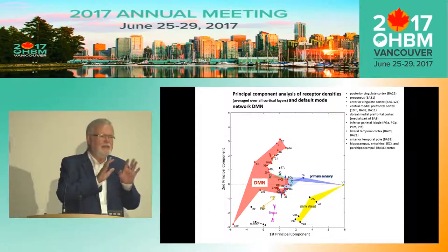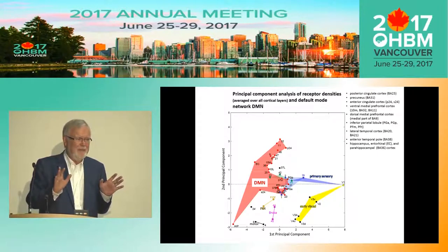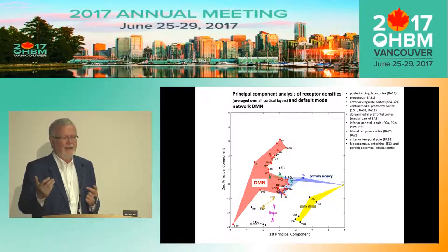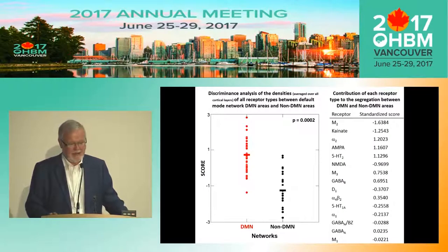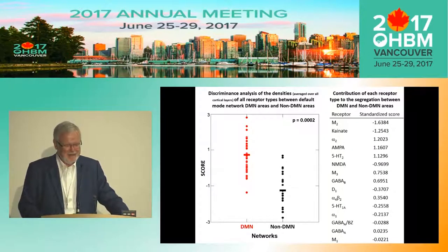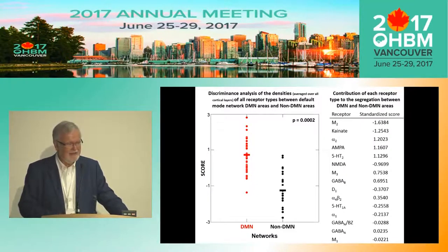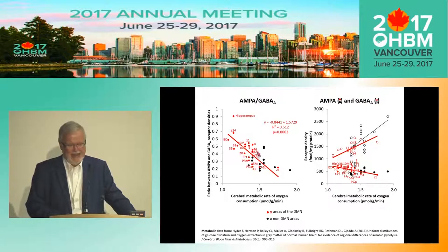We know a lot about structural connectivity, functional connectivity, and more in the default mode network. But the question is: what is behind it? What is the molecular machinery driving the separation into default mode network and non-default mode network? A discriminant analysis of the densities of all receptor types between default mode network and non-default mode network areas shows that the difference between receptor fingerprints in these partitions is highly significant.